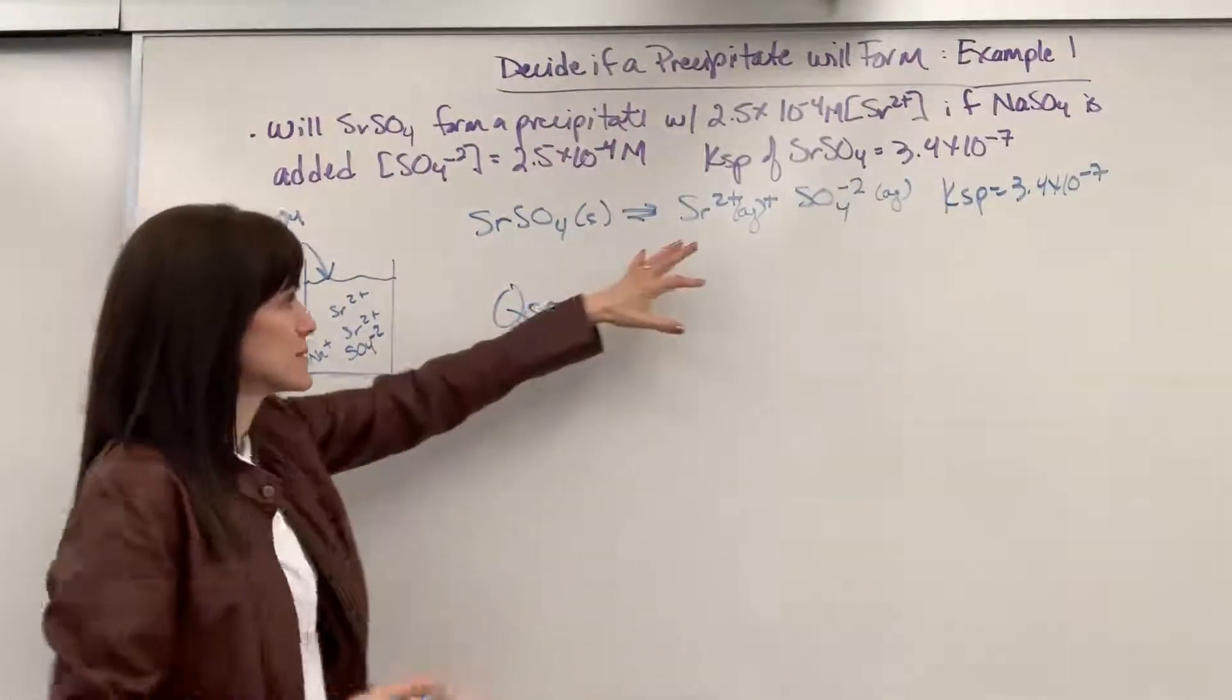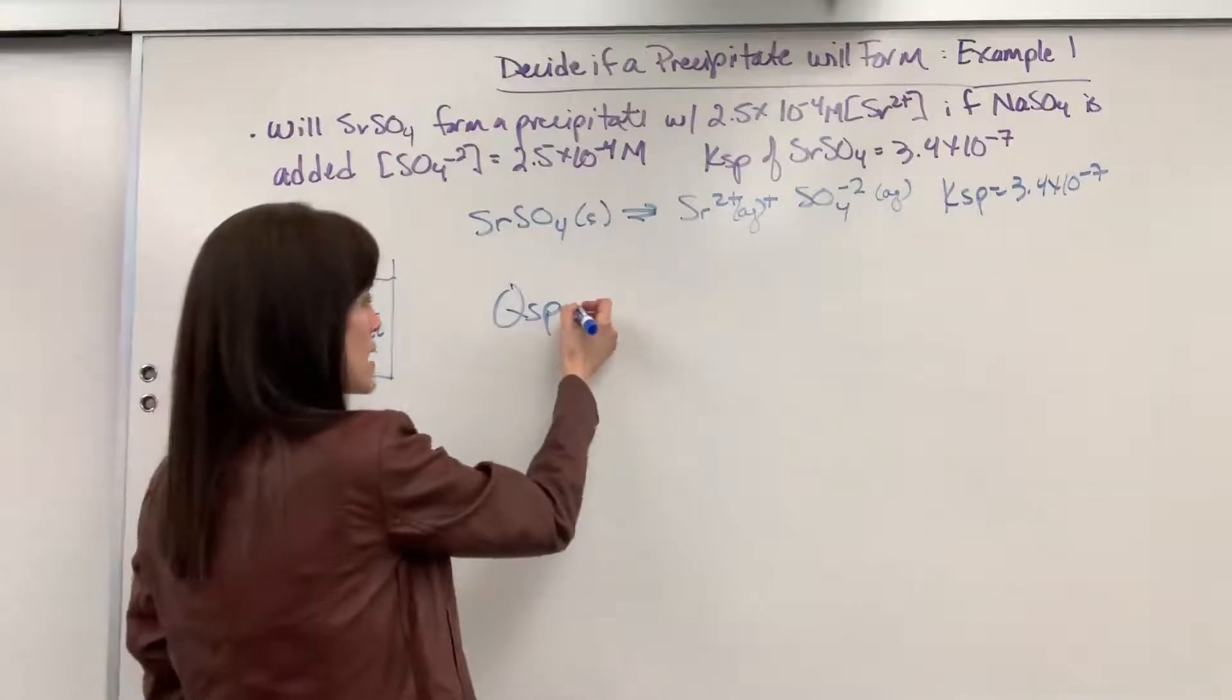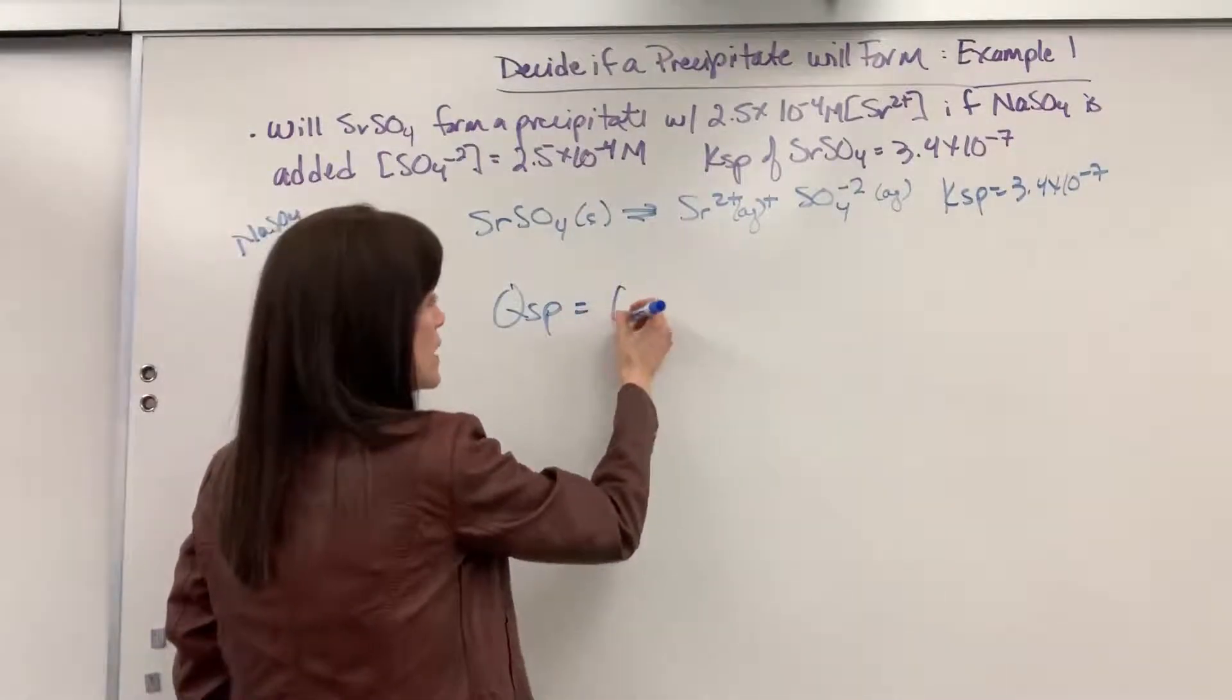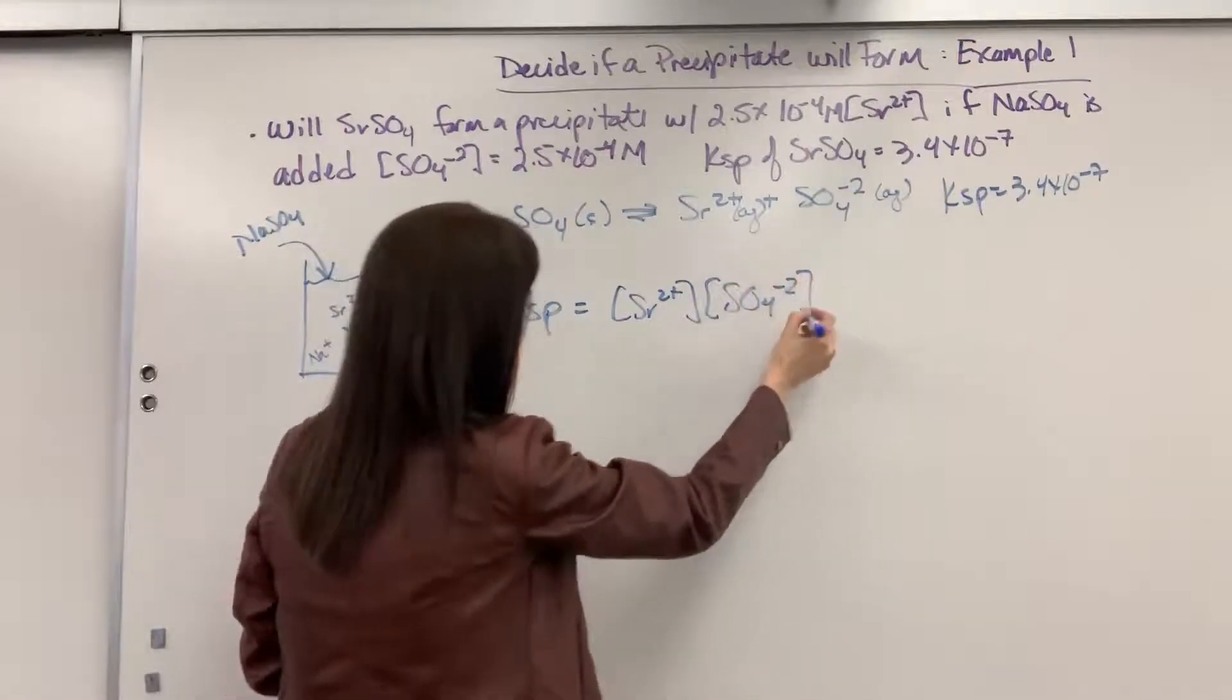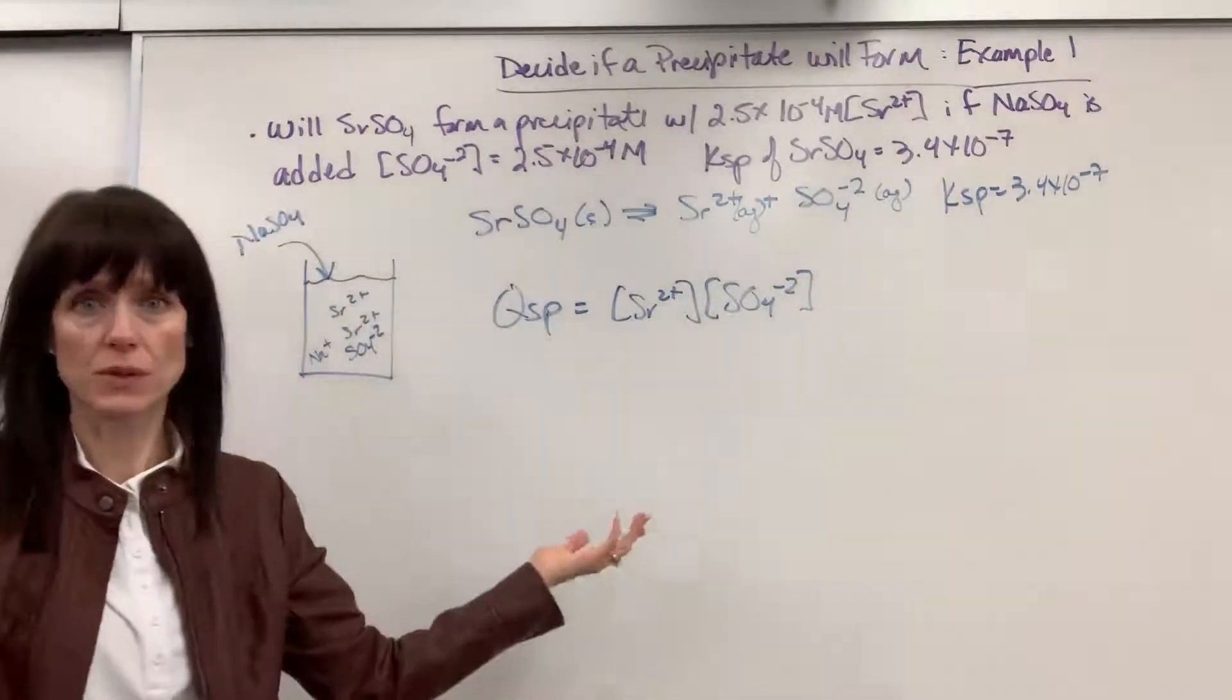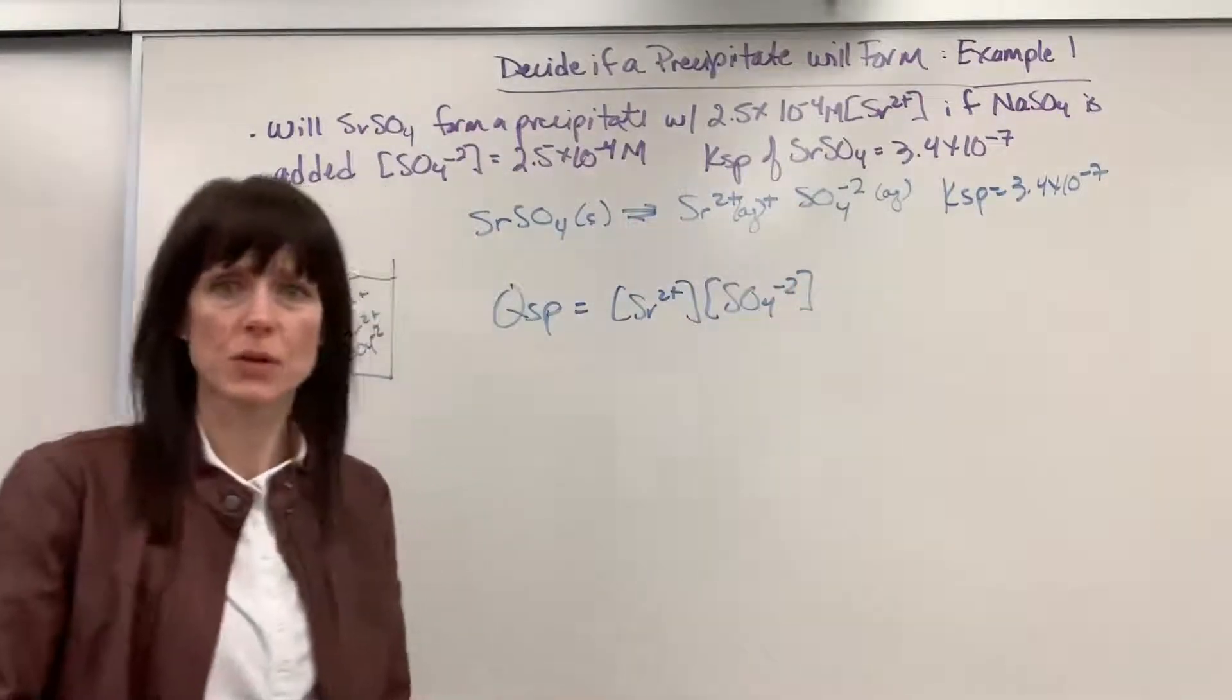So, Qsp is the same equilibrium expression, products minus reactants, or divided by reactants. So, we have our products, strontium ion times the sulfate ion, divided by reactants. It's a solid, so it's just 1. These are both the coefficient of 1, so their exponents are also 1.